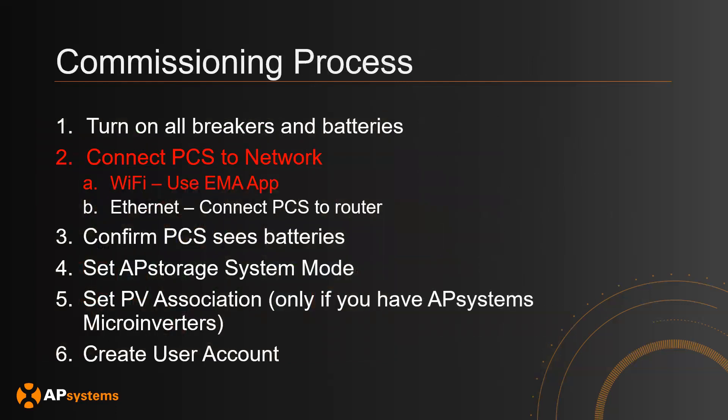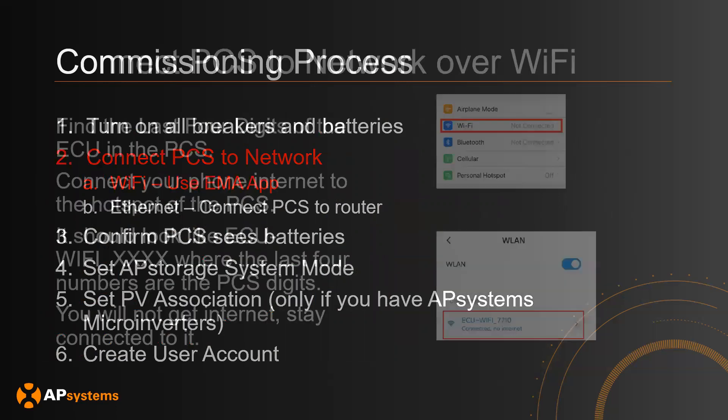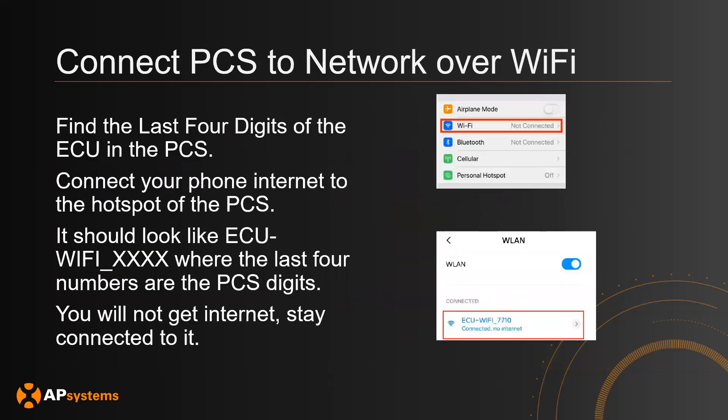Now we're going to connect the PCS to the network. For Ethernet, you simply connect the PCS to the router — quite straightforward. For Wi-Fi, it's a bit more involved. First, get the last four digits of the ECU ID on the PCS. Then take your phone or tablet, go to Wi-Fi settings, and connect to the hotspot titled ECU-WiFi underscore the last four digits of the PCS. Note there will be a warning that you won't get internet — that is expected. Make sure you select the prompt to stay connected despite no internet.